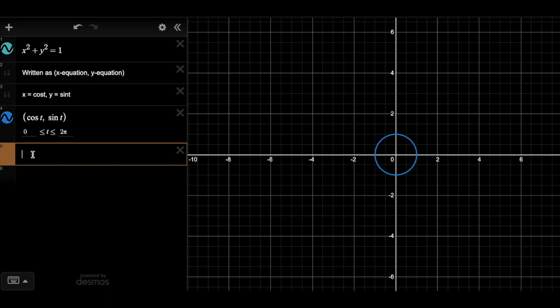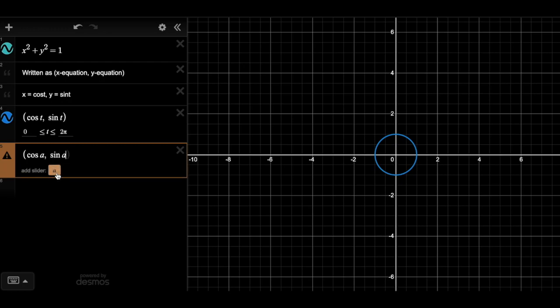Another way that I like to represent this so I can actually see the direction is I'm going to just use an unknown variable. So I'll call it a. So cosine of a and sine of a. And we can add this thing called a slider. And so if I use the slider from zero to two pi and I started at zero and then I hit play, I can actually watch it go around the unit circle from zero to two pi. And now it's going backwards.